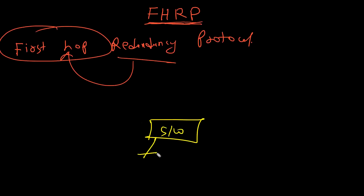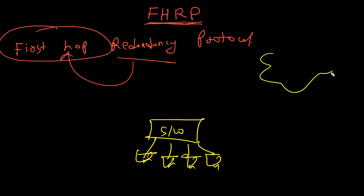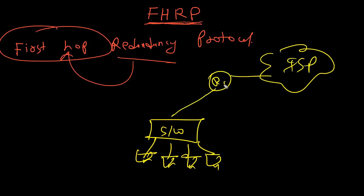This is my switch and here are some users. If this user wants to communicate with an outside user or access the internet, you need to connect your network through an ISP via a router. So this is R1, Router 1. This router is the default gateway for all users, but there is no redundancy for the default gateway.